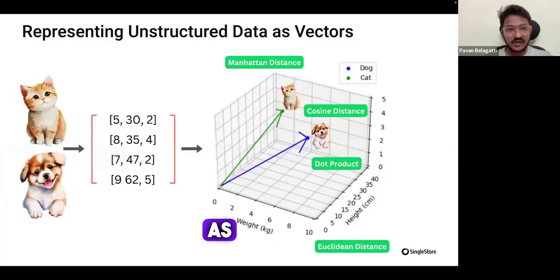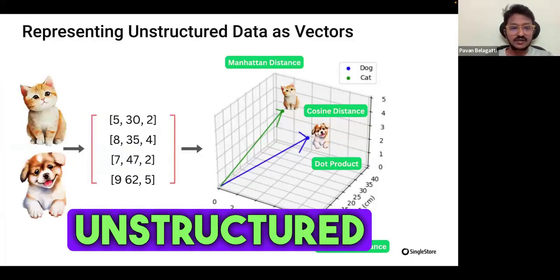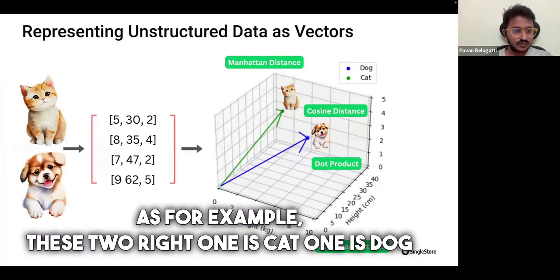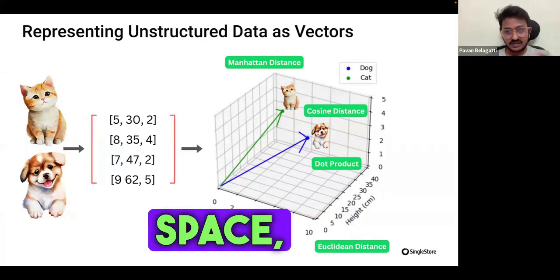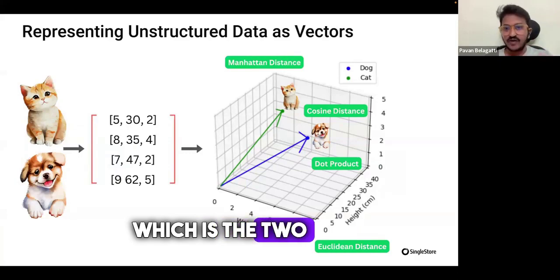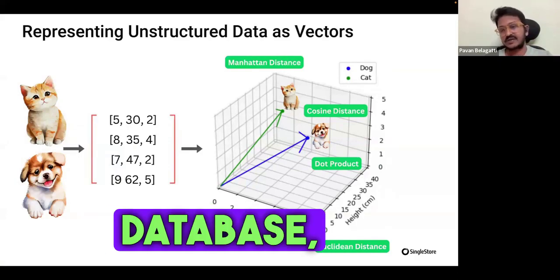Representing unstructured data as vectors. For example, we have unstructured data like these two - one is cat, one is dog, and embeddings are created for this through an embedding model. This is how, in a three-dimensional space, the two vectors are stored in a vector database.